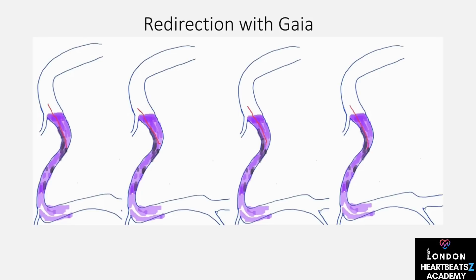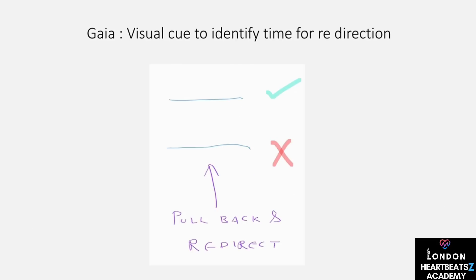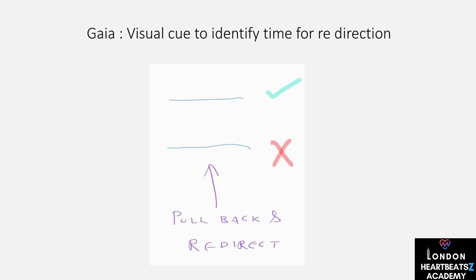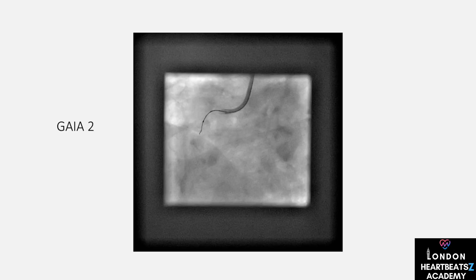Let's focus on antegrade wire escalation, a technique that's like navigating a maze. We use micro-channel probing to find small channels within the occlusion, loose tissue tracking to advance through less dense areas, and penetration to push through tougher segments. Sometimes we combine these methods for the best results — it's a delicate balance of skill and strategy.